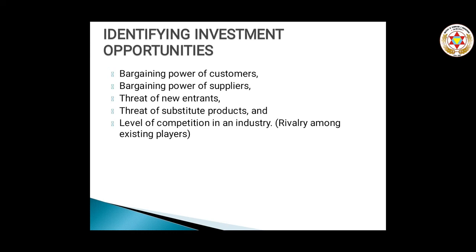Regarding new entrants: they add capacity, inflate costs, push prices down, and reduce profitability. Economies of scale enjoyed by the industry and government policy can limit or even prevent new entrants. Regarding rivalry between existing firms: firms in an industry compete on the basis of price, quality, promotion, service, warranties, and so on. Regarding pressure from substitute products: all firms in an industry face competition from industries producing substitute products, especially when the price-performance trade-off offered by the substitute product is attractive and switching costs for prospective buyers are minimal.